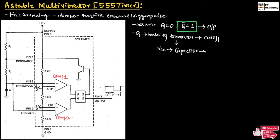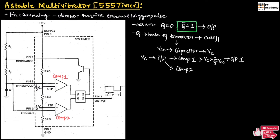Since the transistor is cut off, the voltage VCC will appear across the capacitor. Hence the capacitor will charge with voltage VC. This voltage VC will appear as input to both comparator 1 and comparator 2. At comparator 1, the input VC will be greater than 2/3 VCC, and hence it will produce an output of 1.